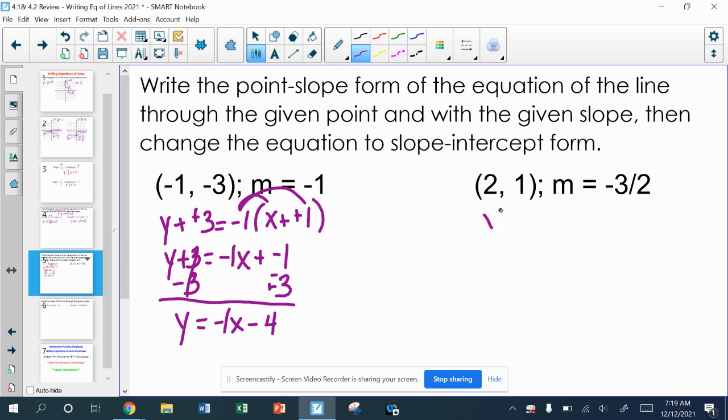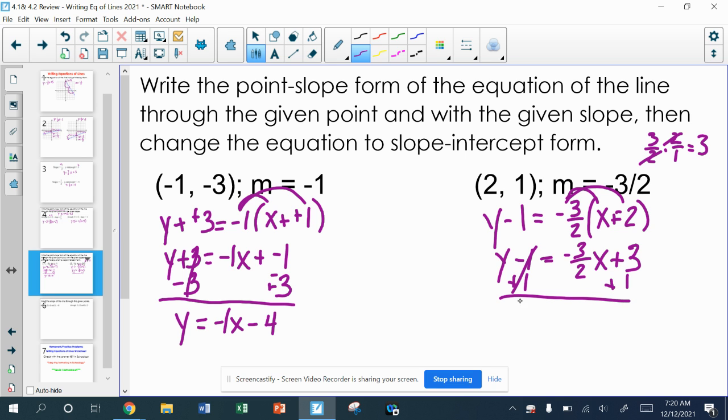And on the second problem, y minus my y number, the slope is a negative 3 over 2, so we're throwing a fraction in here, x minus the x number. When I distribute this, negative 3 over 2x, that's no problem. There, that'll be a negative times a negative, which is going to be a positive, and you can certainly do this if you want to. 3 over 2 times 2 or 2 over 1 is just going to be 3. And again, in the last video, I said you can certainly use a calculator, or you can write it out. 3 over 2 times 2 over 1. I would do some simplifying there. That just gives me 3 over 1, or just 3. And then my last step is just get rid of the 1. y equals negative 3 over 2x plus 4.